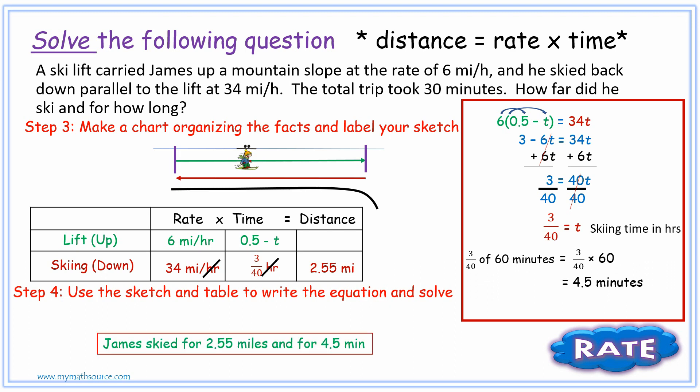And there we have it. Our answer is James skied for 2.55 miles and for 4.5 minutes. And that's how you do a problem of that nature.